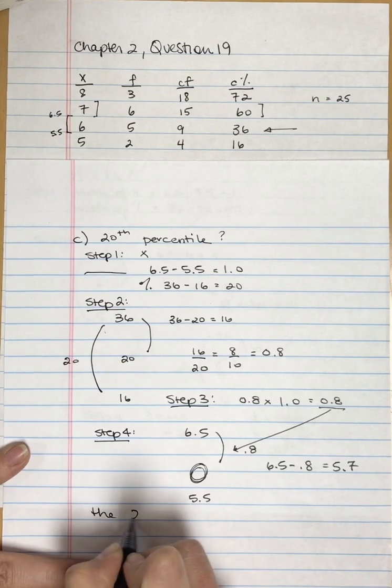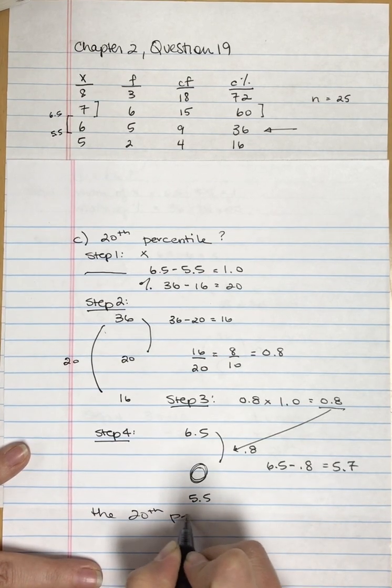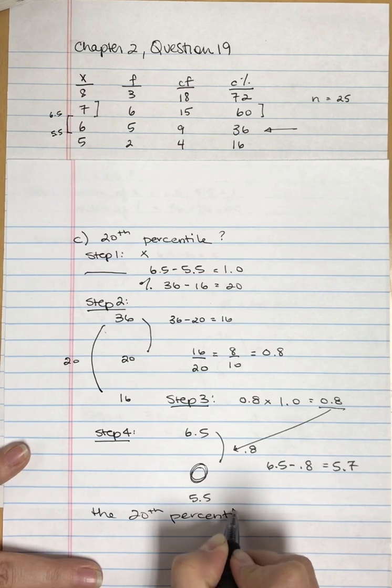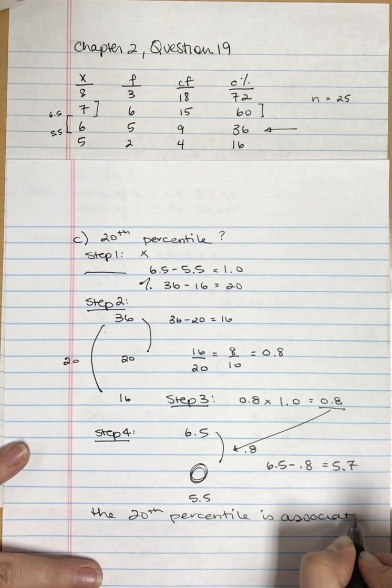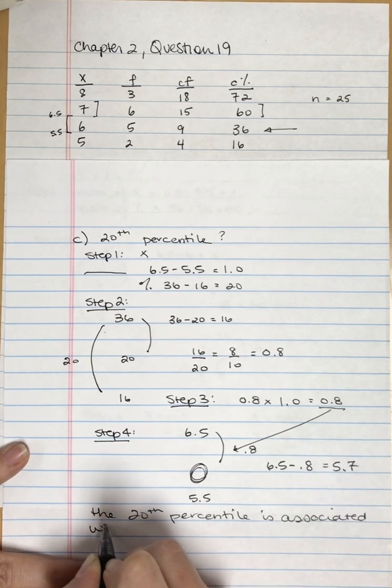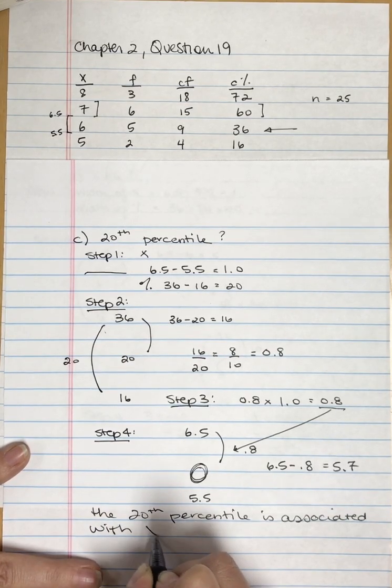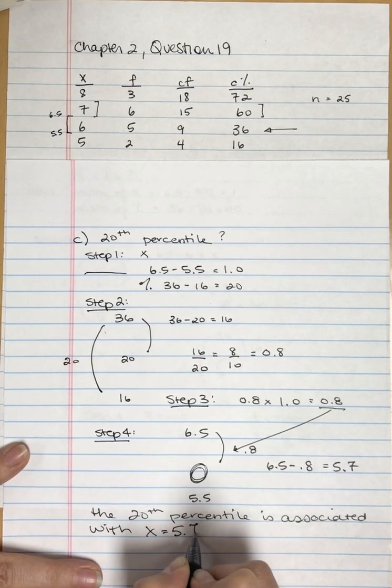The 20th percentile is associated with a score of X equals 5.7.